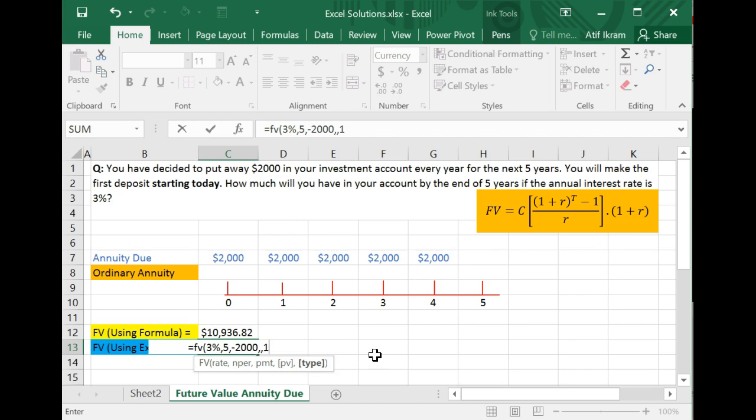If you forget to do this, Excel by default treats every annuity as an ordinary annuity. So you'll get the wrong answer. So make sure that if you're dealing with an annuity due, do not forget to type one for type. Okay.